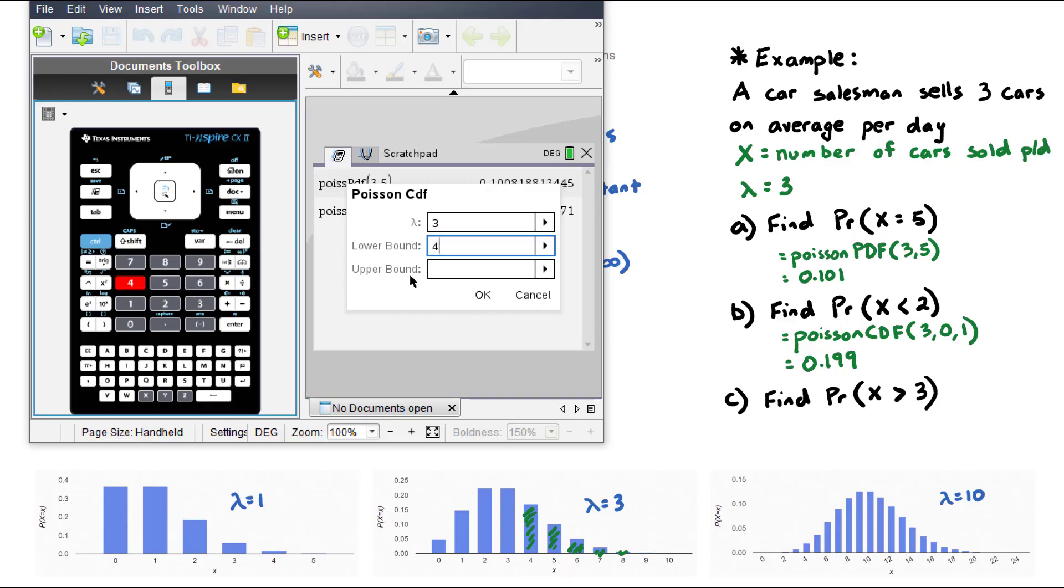We can have a lambda of 3, a lower boundary of 4, and an upper boundary. I recommend just putting in a very large number. I can't enter infinity; the calculator doesn't allow me to do that.